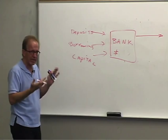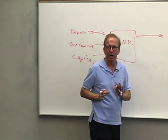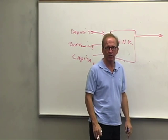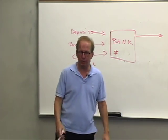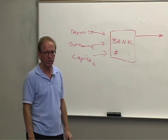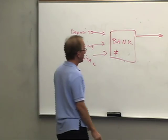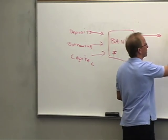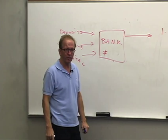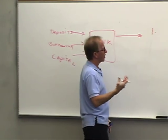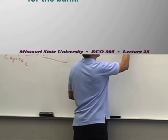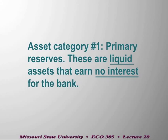They're not going to just hold cash. When they acquire assets, some of those dollars they do continue holding — in reserve accounts, for example. We'll talk about four different categories of bank assets. The first one we'll call primary reserves. Everything in this category constitutes liquid assets, and they earn no interest.